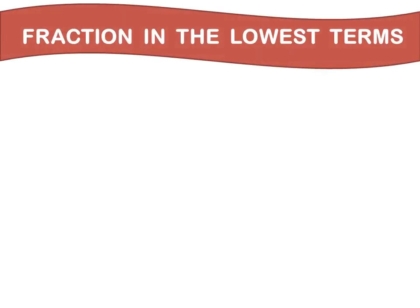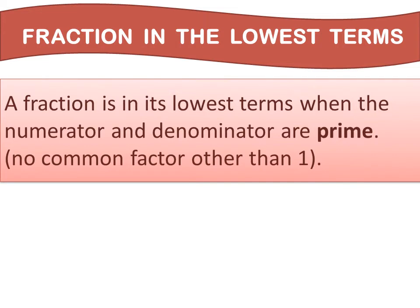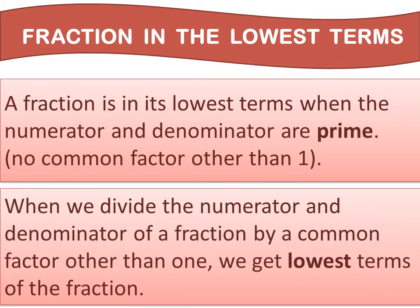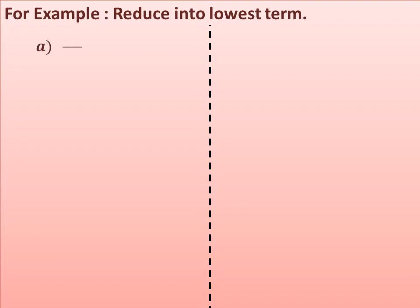The next is fraction in the lowest terms. A fraction is in its lowest terms when the numerator and denominator are coprime — meaning no common factor other than 1. When we divide the numerator and denominator by a common factor other than 1, we get the lowest terms of the fraction. For example, reduce 18 upon 24: the HCF of 18 and 24 is 6. Dividing both by 6 gives 3 upon 4, which is in the lowest term because 3 and 4 have no common factor other than 1.